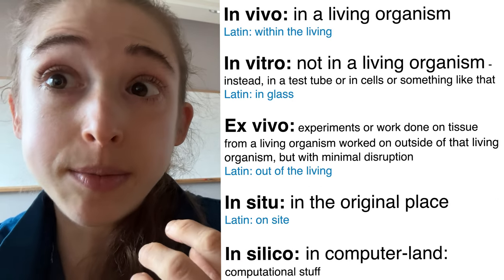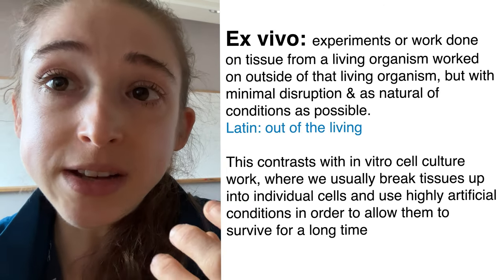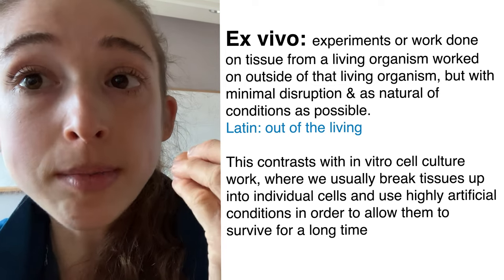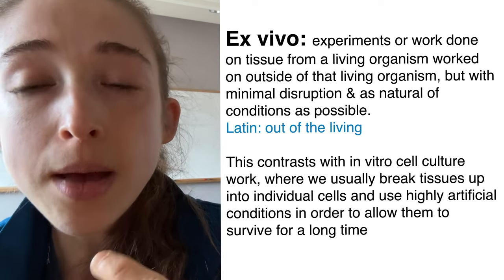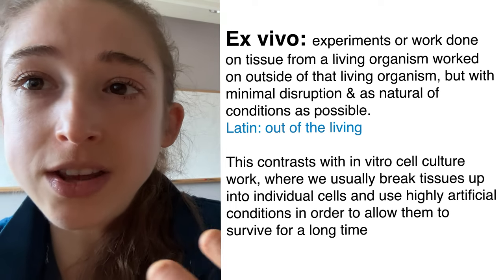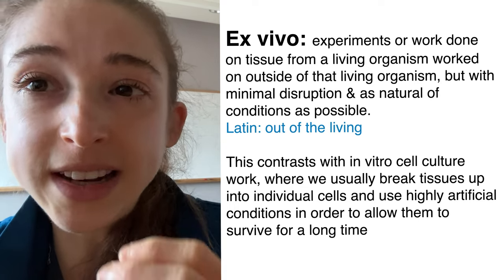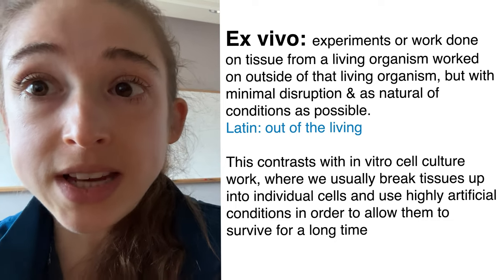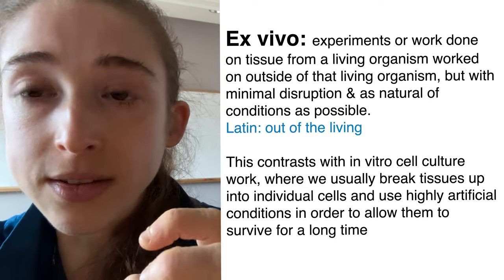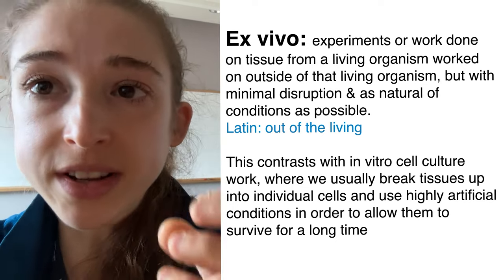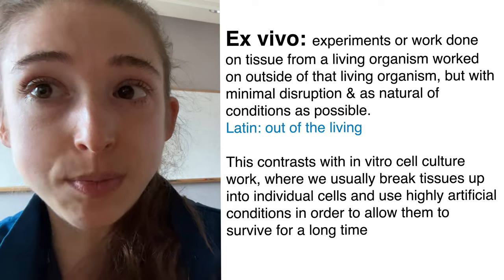Then we have ex vivo. As opposed to in vivo meaning 'within the living,' ex vivo is 'outside of the living.' Basically, what ex vivo is — you take a tissue from a living organism and then work with it outside of the organism. You're not really propagating it or trying to make artificial conditions where it'll grow forever. Instead, you're working on it in as natural a setting as you can — maybe taking out the liver from some organism and doing experiments on it, dealing with whole organs or whole tissue, trying to keep things in as natural an environment as possible.